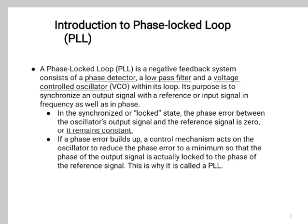In the synchronized or locked state, the phase error between the oscillator's output signal and the reference signal is zero or remains constant. If a phase error builds up, a control mechanism acts on the oscillator to reduce the phase error to a minimum so that the phase of the output signal is actually locked to the phase of the reference signal. This is why it is called a PLL.